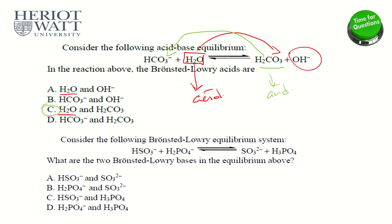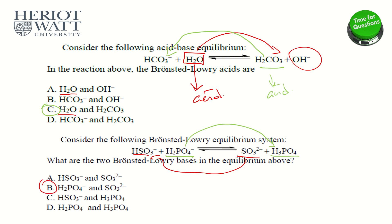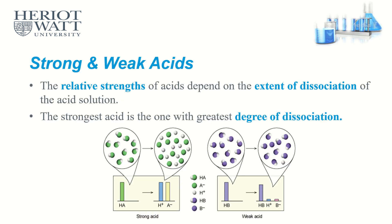Next question: what are the two Bronsted-Lowry bases in the equilibrium? Look from the left — which species accepts a proton? One species accepts a proton going from left to right. On the right side, another species also accepts a proton. The combination is H₂PO₄⁻ and SO₃²⁻, so the answer is B.